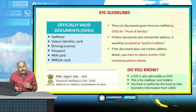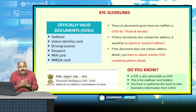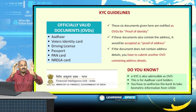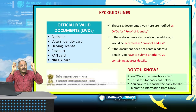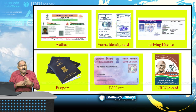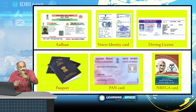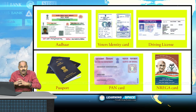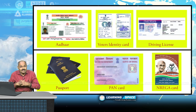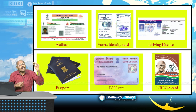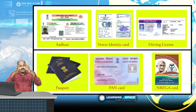KYC is basically about ID proof and address proof. To confirm your identity and address, six documents are designated as Officially Valid Documents by the Reserve Bank of India, and these are valid across the country. They are: Aadhar, issued by the Unique Identification Authority of India; Voter Identity Card, issued by the Election Commission; Driving License, issued by State Transport Authorities; Passport, issued by the Government of India; PAN Card, issued by Income Tax Authorities; and Mahatma Gandhi NREGA Job Card, issued by State Governments.